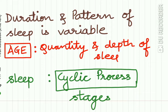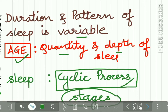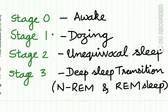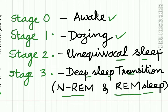The duration and pattern of sleep varies in different individuals depending upon age. The quantity and depth of sleep also depend on the individual's age. This sleep process is an architectural, cyclic process that is essential for refreshing sleep. The sleeping subject passes through different stages: Stage 0 (awake), Stage 1 (dozing), Stage 2 (unequivocal sleep), and Stage 3 (deep sleep), which involves a transition between non-rapid eye movement (NREM) sleep interspersed with rapid eye movement (REM) sleep.